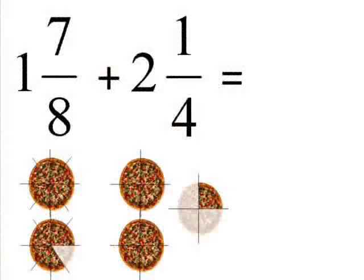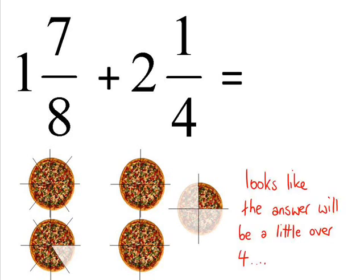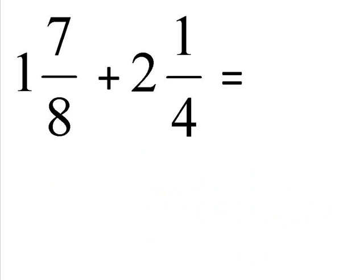The next thing we're going to look at is how to add when you've got mixed numbers involved. The example here is 1 7 eighths plus 2 and a quarter. You see the answer probably is going to be a little bit more than 4. The first thing you've got to do with these is you have to change these mixed numbers into improper fractions.